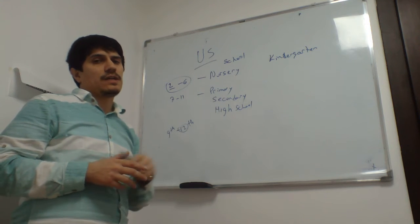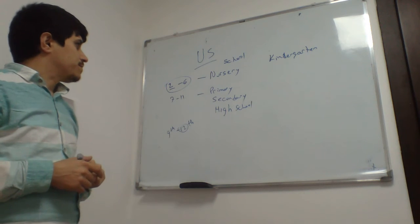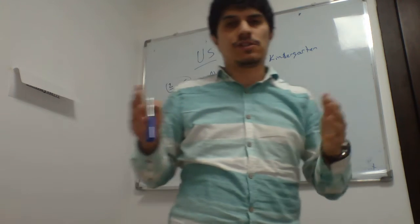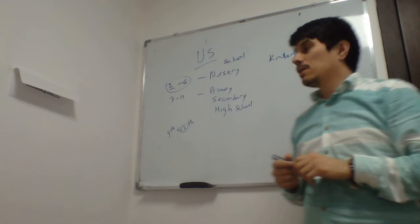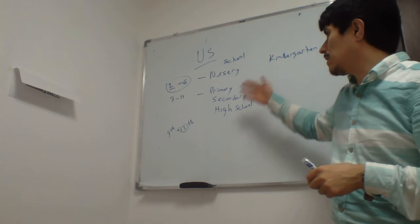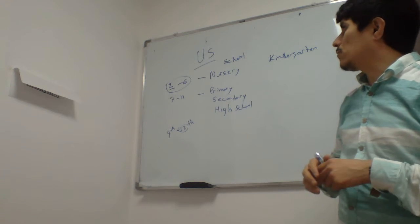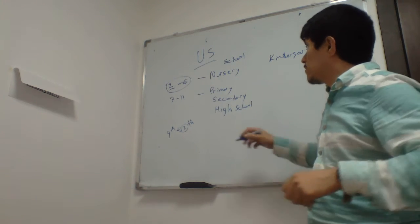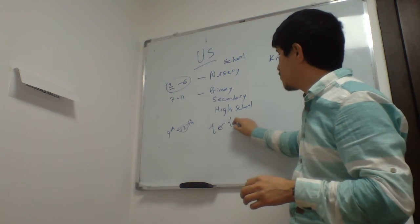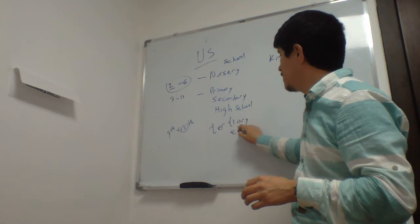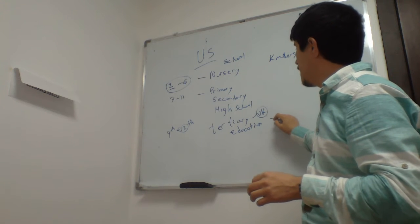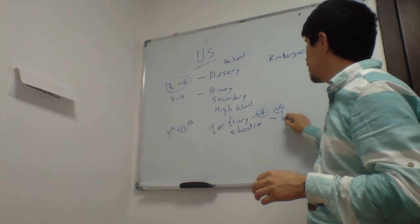Since there are four years of education in each category, we have four types of students based on their entrance year to the university, to the high school, or to the nursery school. Also, let me just tell you that we call it tertiary education, this is the British version, and in the US we call it higher education.